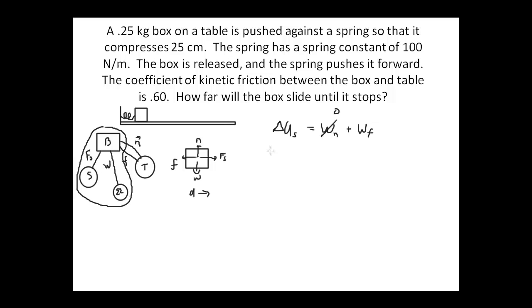We have one half K delta X squared F minus one half K delta X squared I. Now friction tries to slow things down, so we know that's negative work, and that will be force of friction times D.